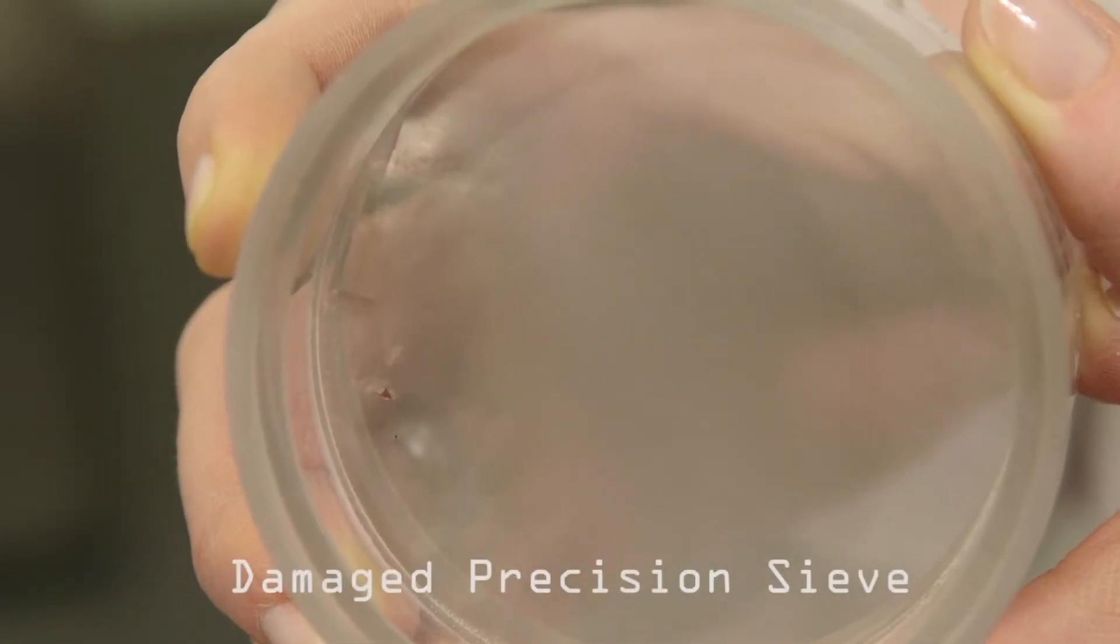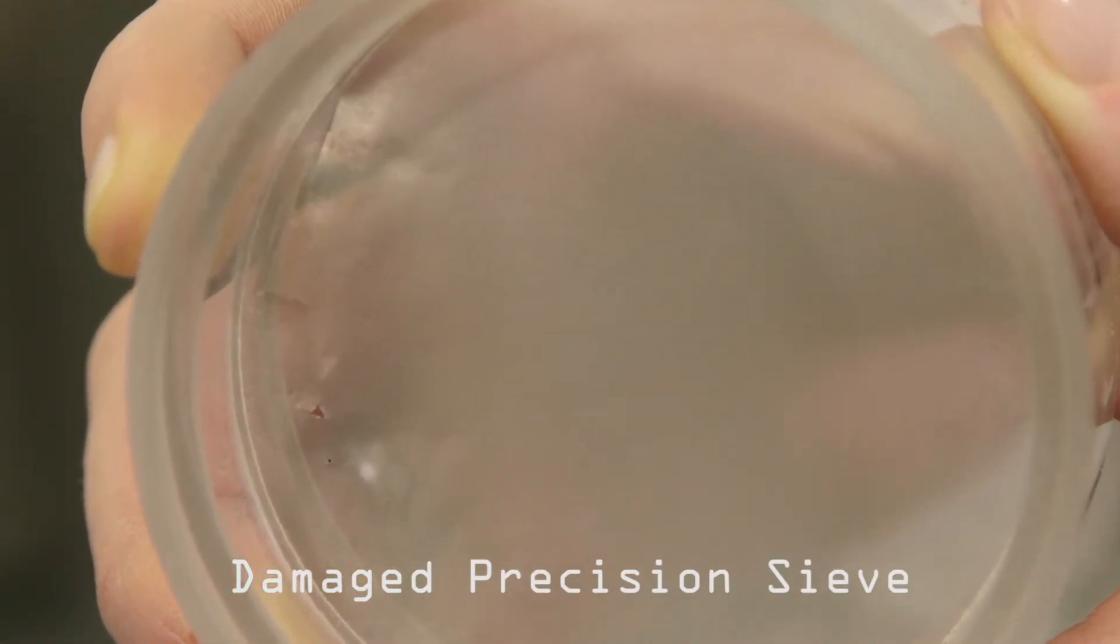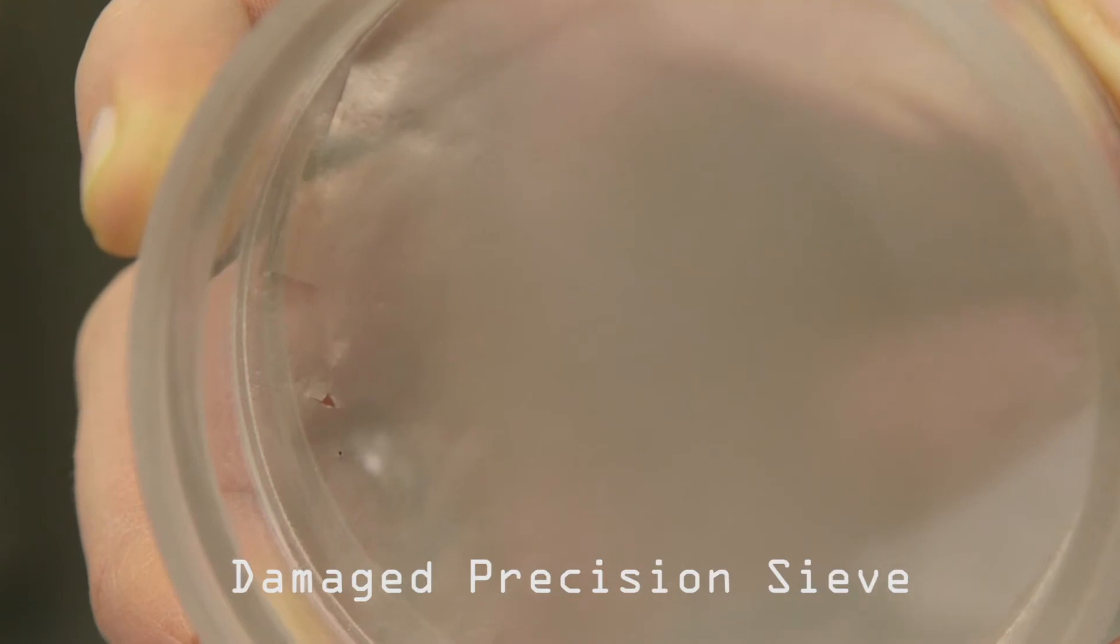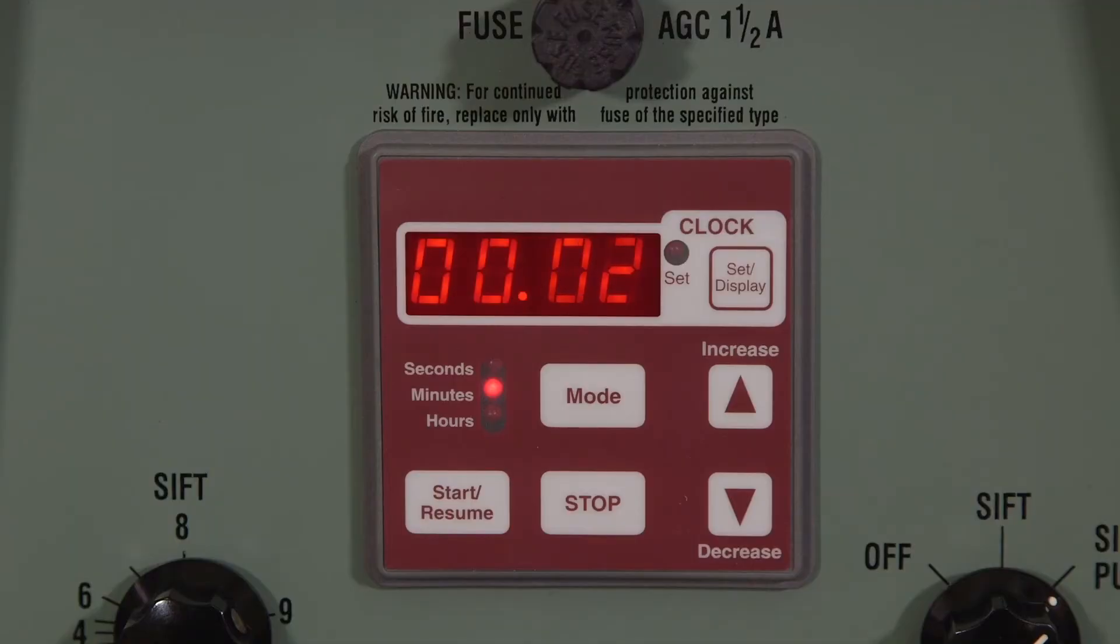Excessive amplitude may exacerbate electrostatic charge problems, contribute to equipment wear, and possible sample loss. Precision sieves are especially prone to premature or immediate failure if run with excessive sample size, excessive amplitude, or if on an extended test cycle.